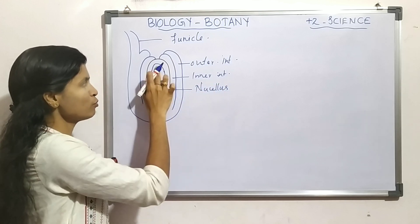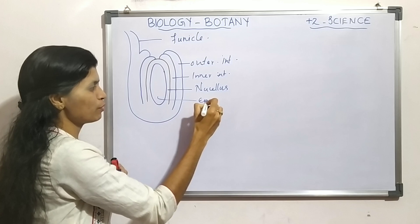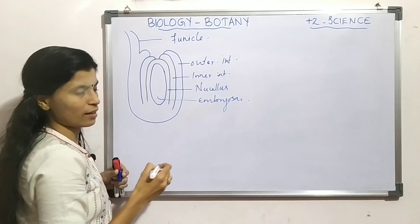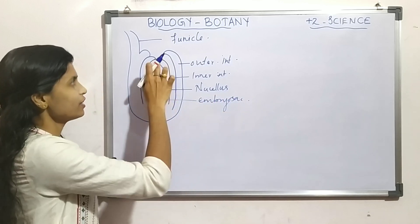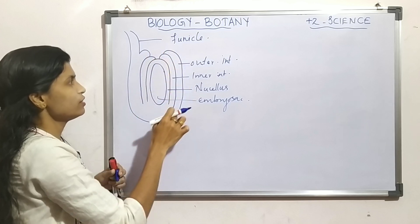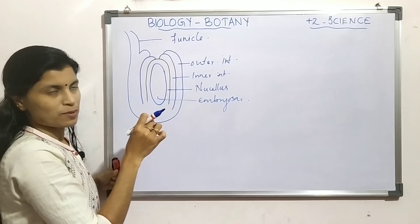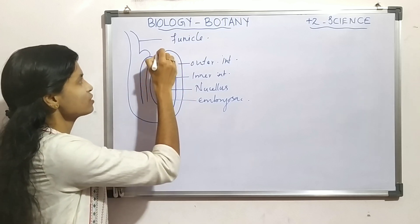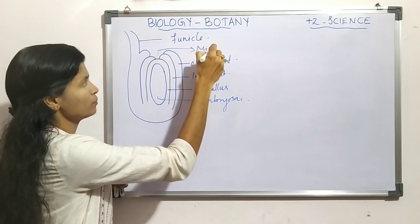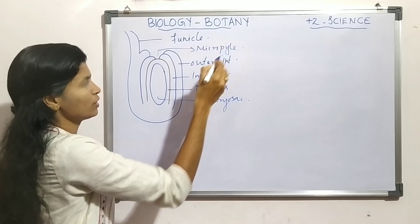Then, the innermost part is called the embryo sac. And here, there is an opening where the integument is absent. That opening is called the micropyle.